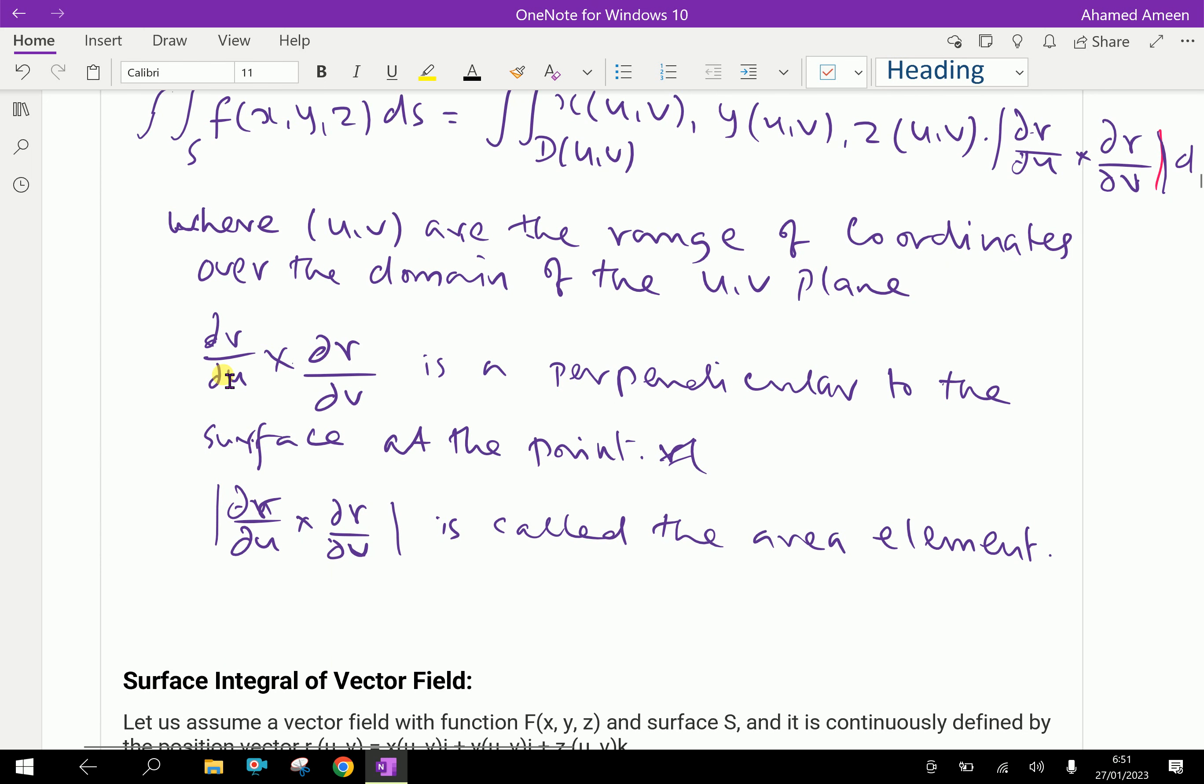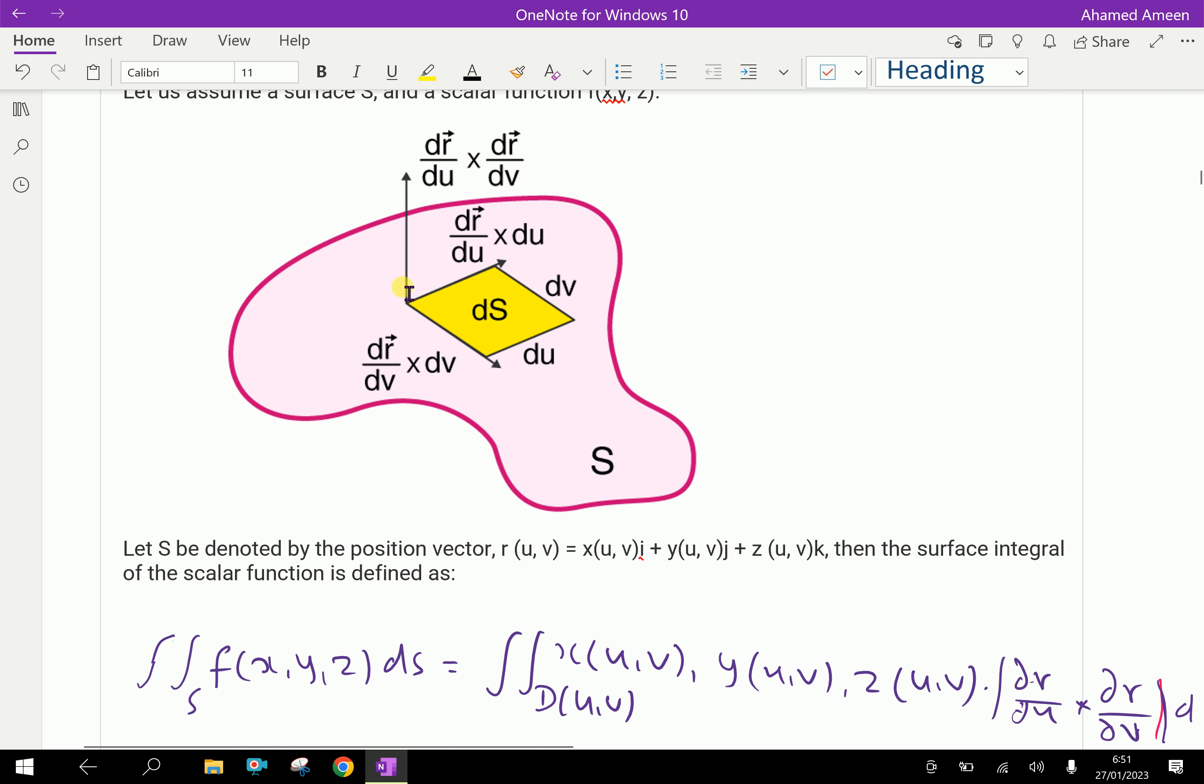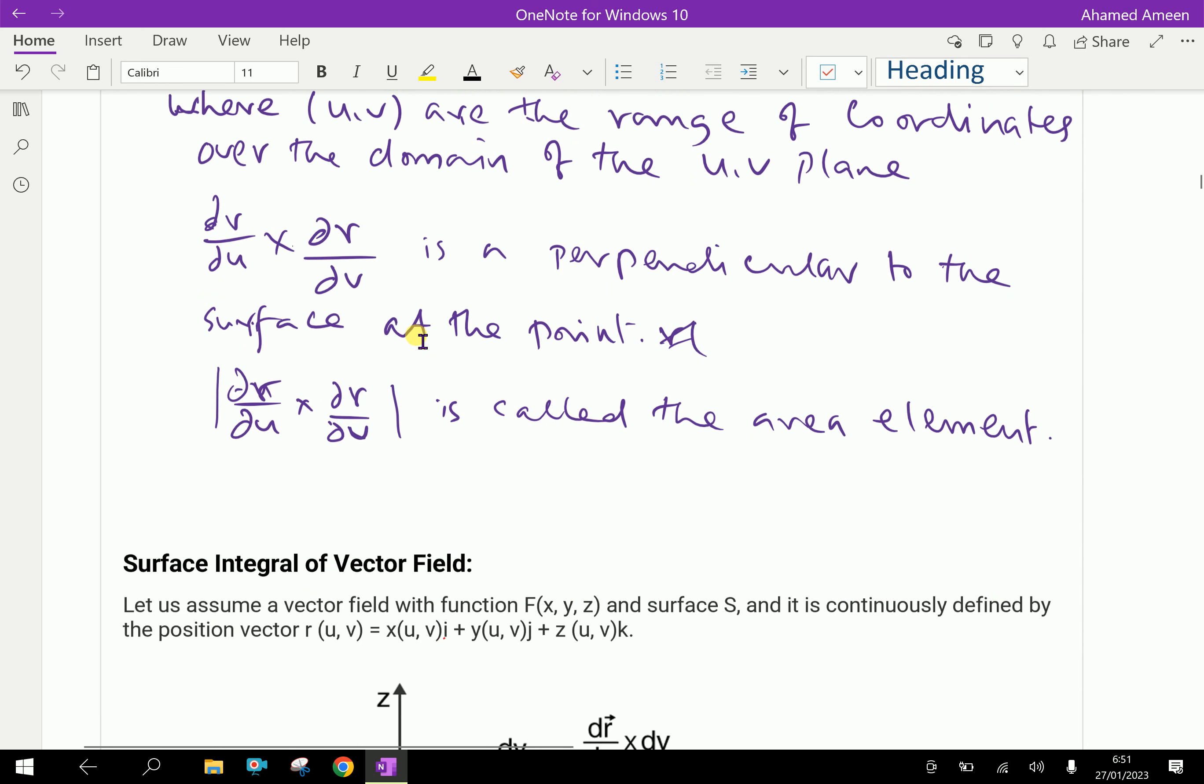Where (u, v) are the range of coordinates over the domain of the u-v plane. Here, dr/du cross dr/dv is perpendicular to the surface at the point. Therefore, modulus of dr/du cross dr/dv is called the area element.